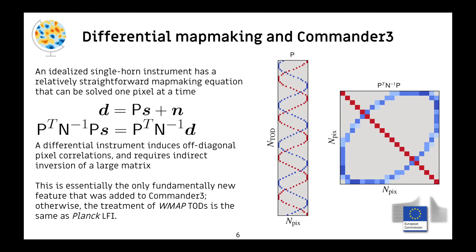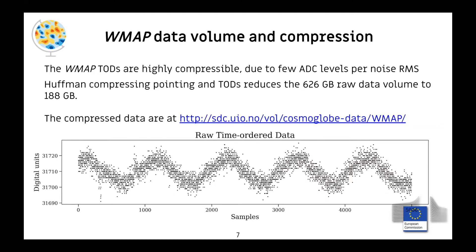This was one of the biggest additions in terms of computation time. The raw TOD for WMAP is about 626 gigabytes, but the data are highly discretized, so we can use Huffman compression to reduce the size by about a factor of four. In terms of RAM requirements, it is possible to hold all 10 differencing assemblies from WMAP in one node at a time — about 200 GB. We've made this available as a product, and we'll make the link to the presentation available afterwards.